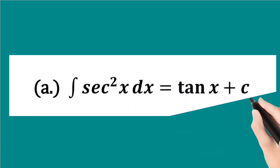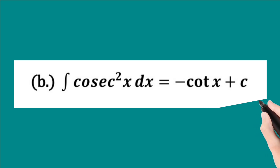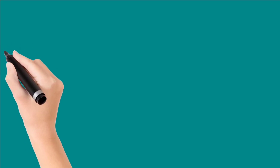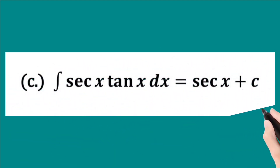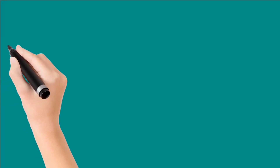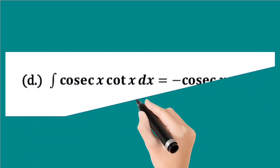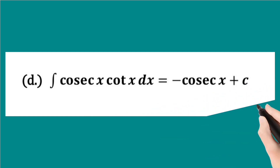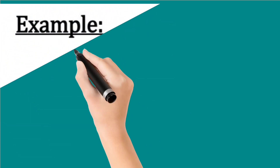From these formulas we can have that the integral of sec square x dx is equal to tan x plus c, the integral of cosec square x dx is equal to minus cot x plus c, the integral of sec x tan x dx is equal to sec x plus c, and the integral of cosec x cot x dx is equal to minus cosec x plus c, where c is a constant of integration. Now we are going to apply these formulas to solve some examples.